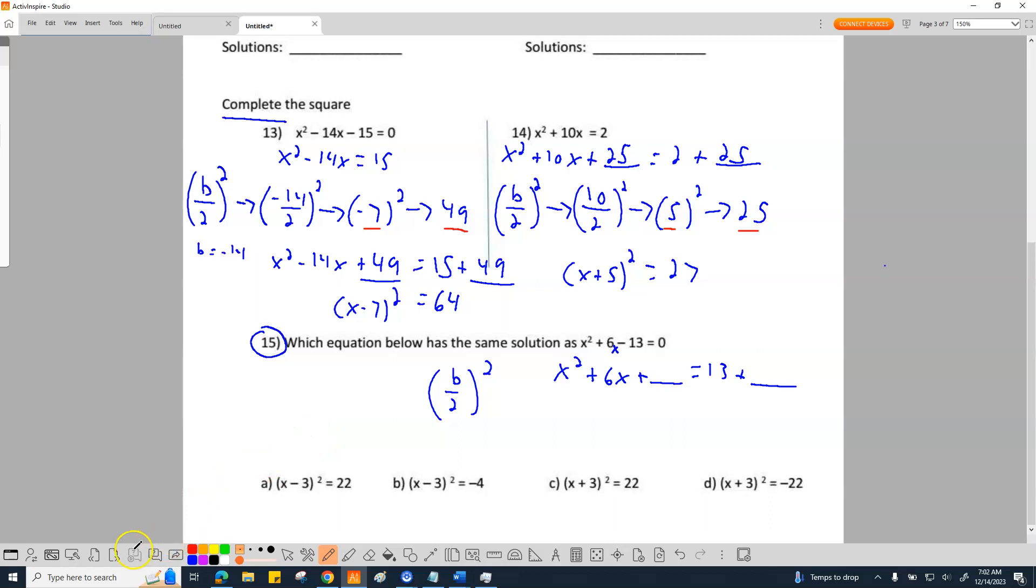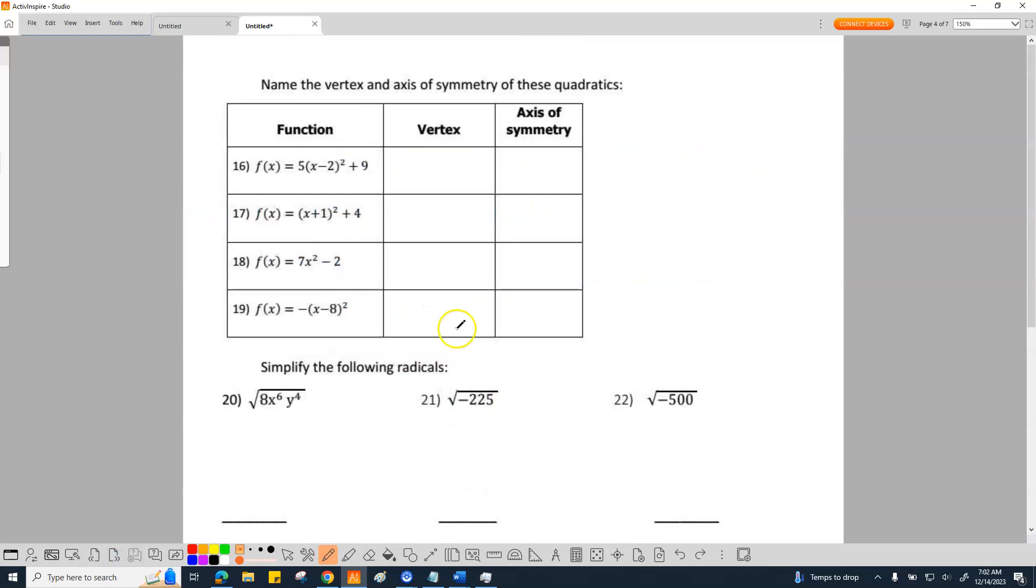All right, going on to the next. I don't want to work it because it's the same as problems 13 and 14 in terms of mechanics. Now, which one is this? Name the vertex and axis of symmetry of these quadratics.